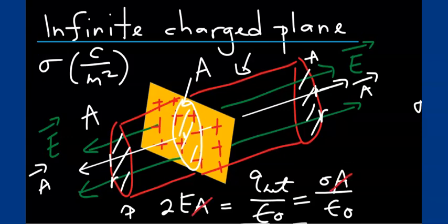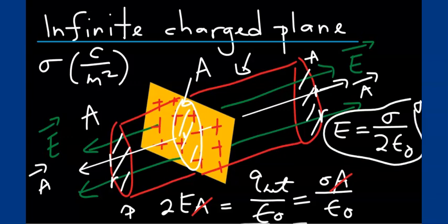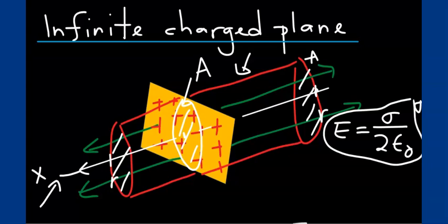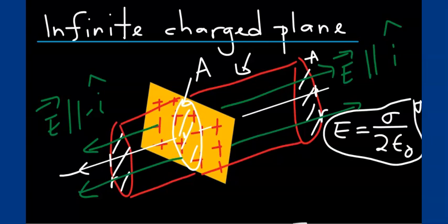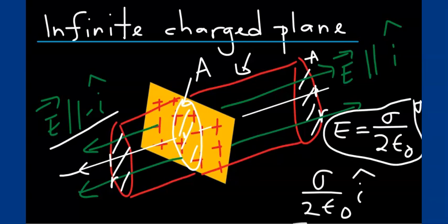A cancels, and the electric field is given by sigma over 2 epsilon naught. Note that the electric field is constant — not only at this distance, but anywhere in the horizontal direction. This is only true if the charge plane is an infinite charge plane. Taking this direction as the x-axis, the electric field on one side is sigma over 2 epsilon naught in the i-hat direction, and on the other side it is minus sigma over 2 epsilon naught i-hat.